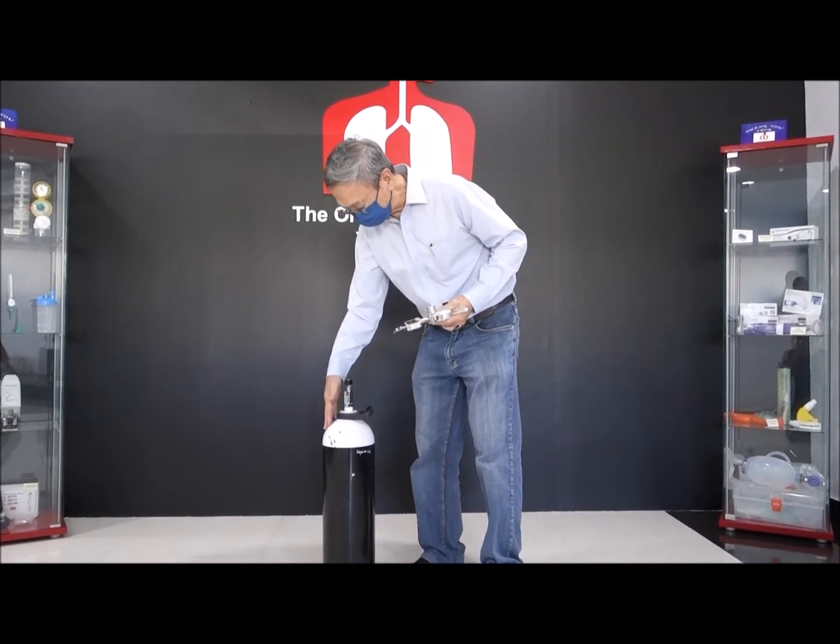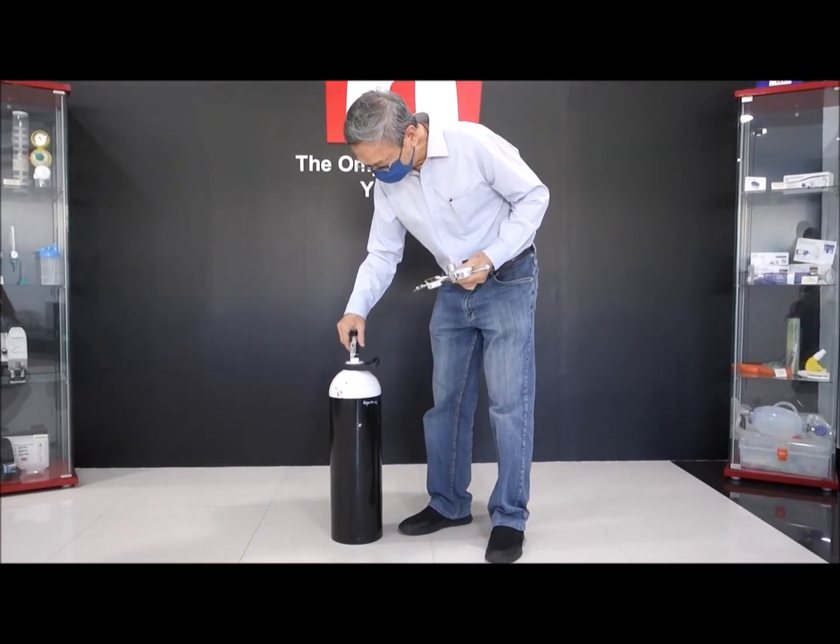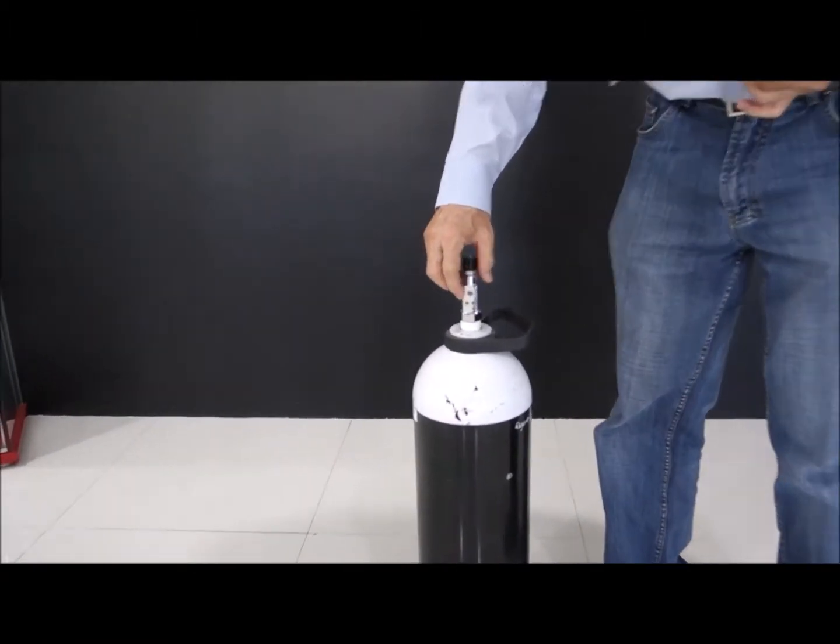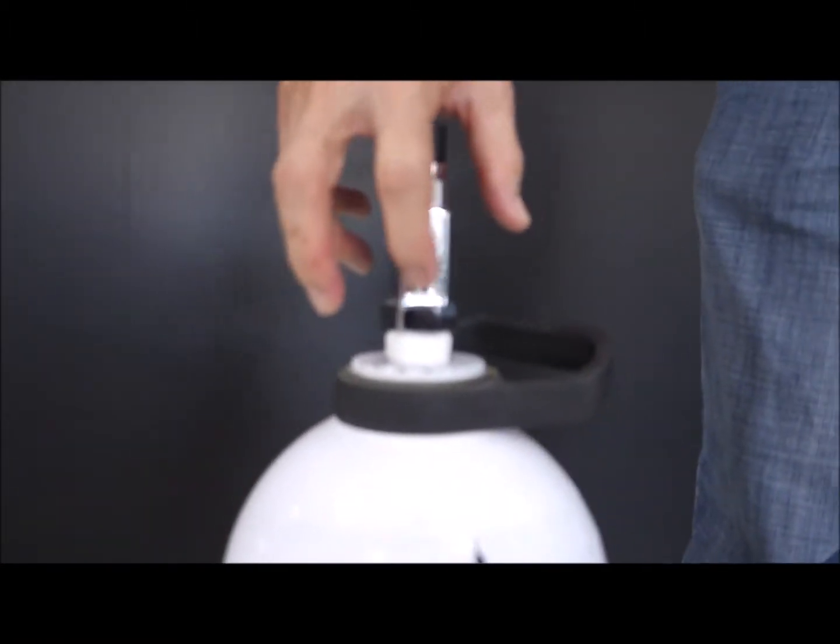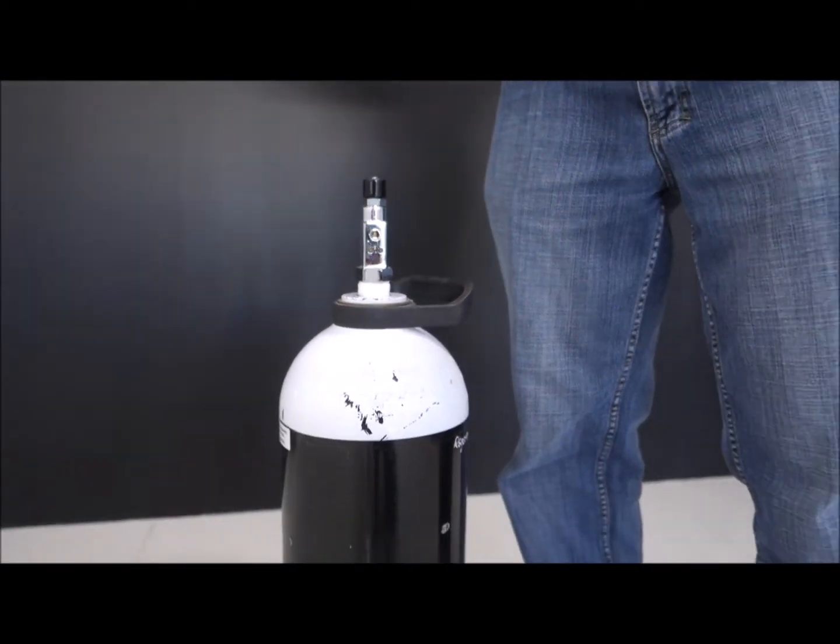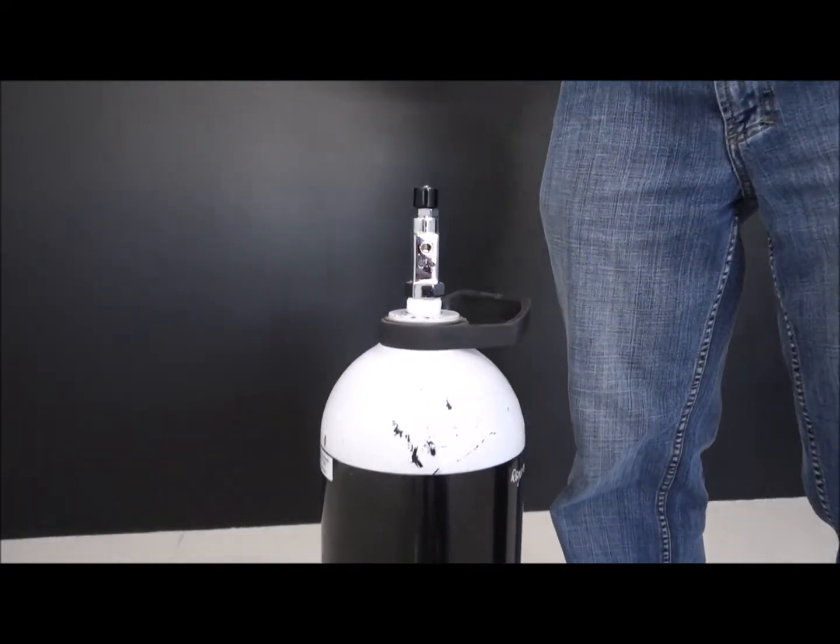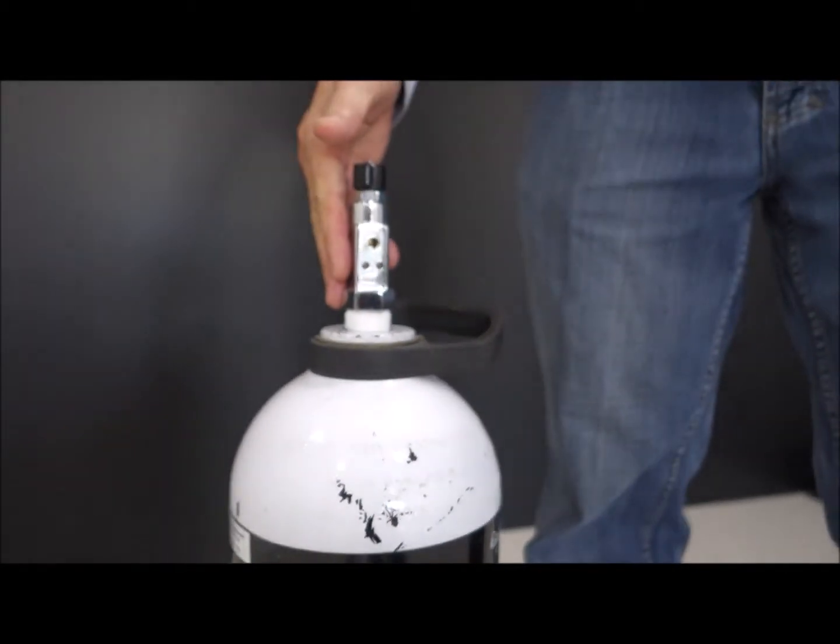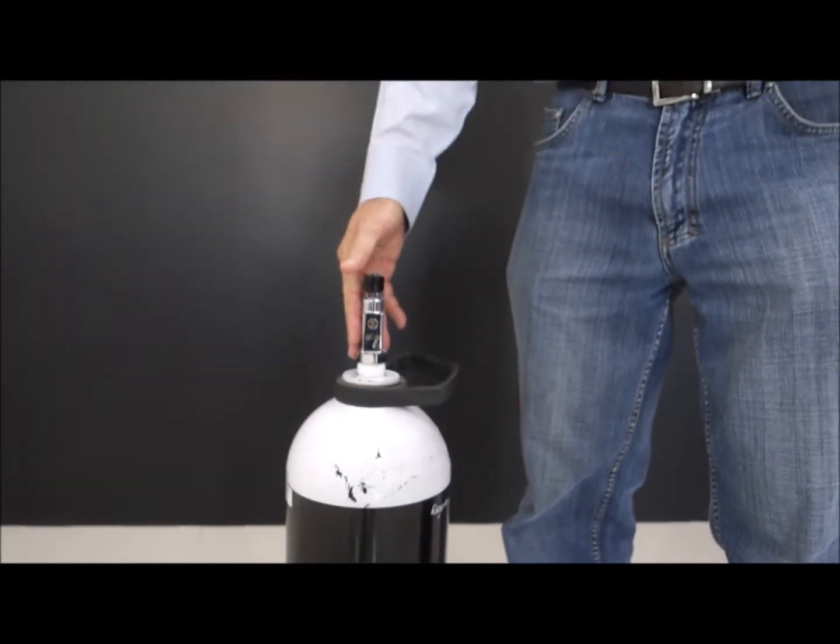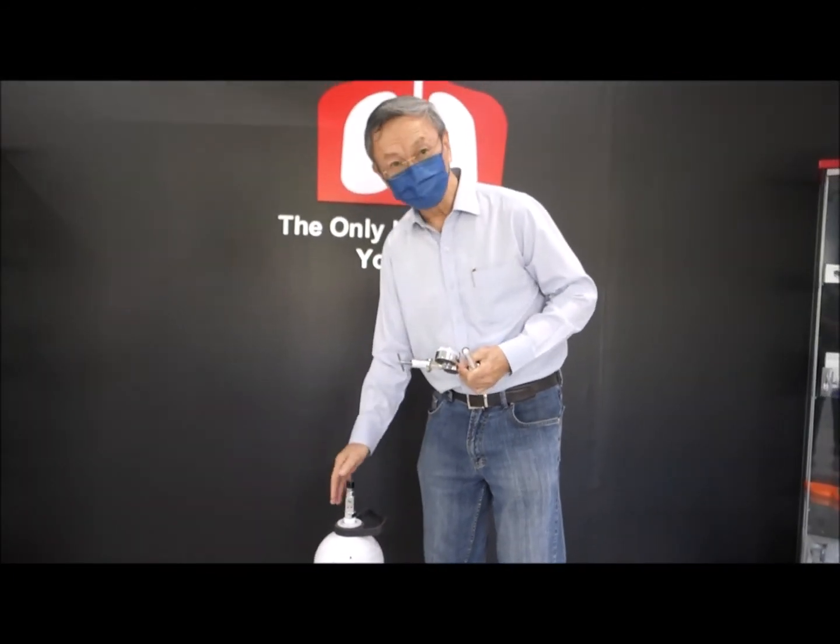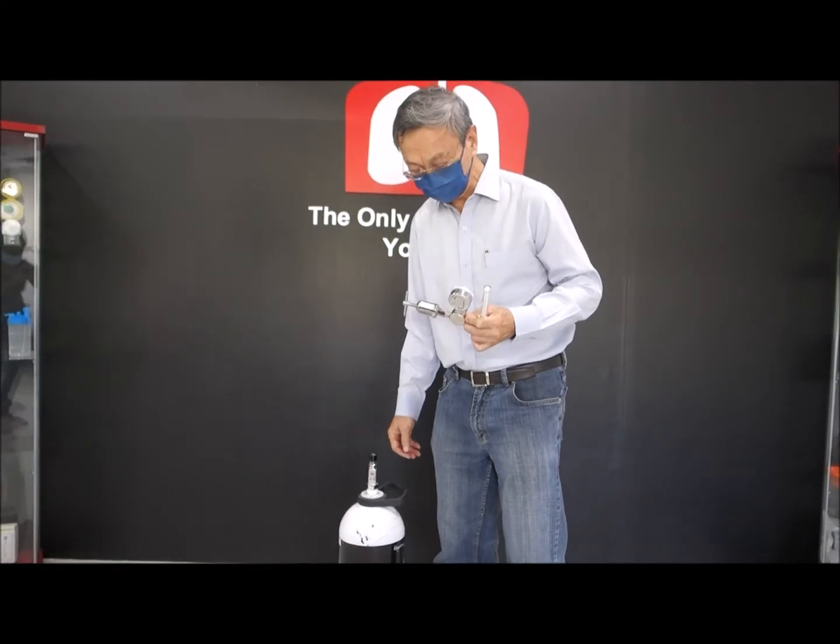So this is the cylinder. And as you can see here, the cylinder comes with what we call a pin index valve. That means it's indexed for safety reasons to only be able to draw out oxygen. So if this is filled with other gas, like nitrous oxide or carbon dioxide, you won't be able to connect an optional cylinder to fit into the pin index valve. So that's very important.